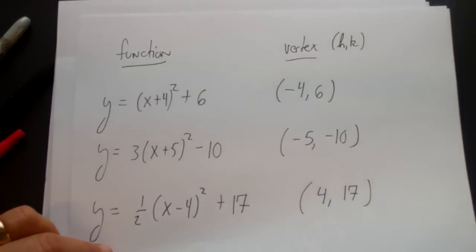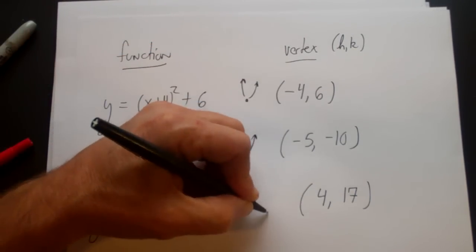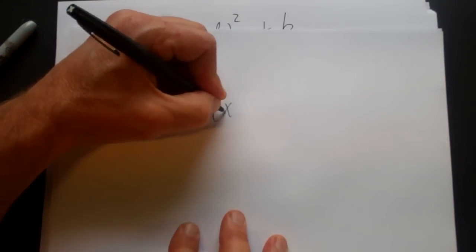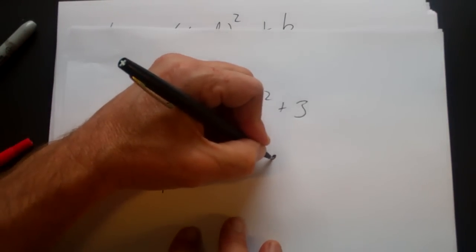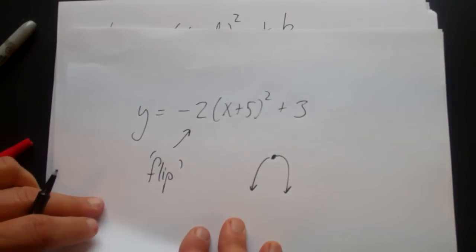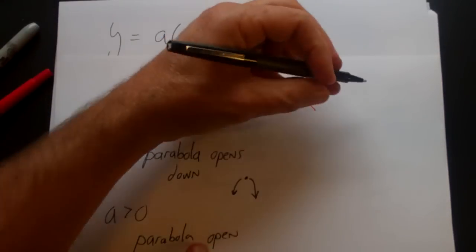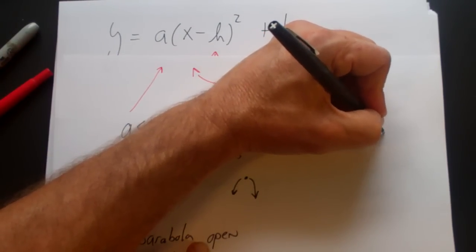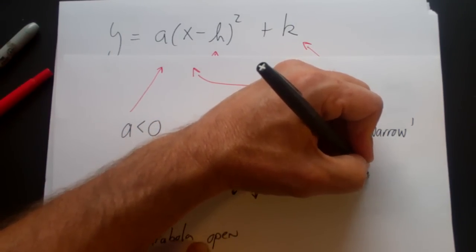Looking at our previous problems, none of these flip — they all open up, because the values in front are positive one, positive three, and one half. If on the other hand you had y equal to minus two times x plus five squared plus three, this will flip the parabola and open down. The second thing a does is tell whether it's narrow or wide. If the absolute value of a is greater than one, the parabola is narrow. If the absolute value of a is less than one, it's wide.